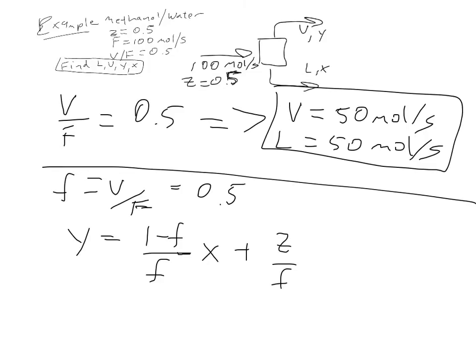If we go ahead and take f, plug it into this equation, we're left with a simple operating line: Y equals negative X plus 1. That is our operating line, and that's what we're going to use to solve this problem.